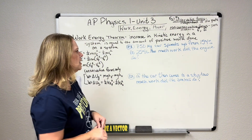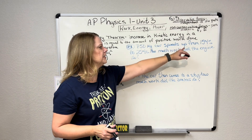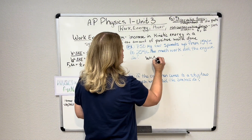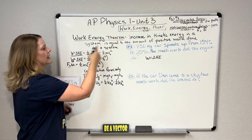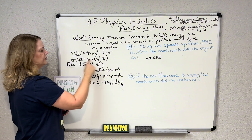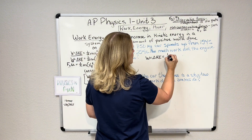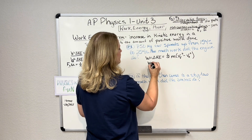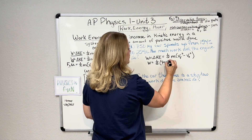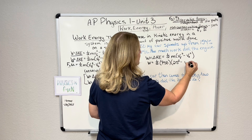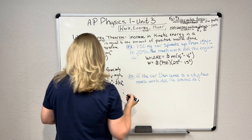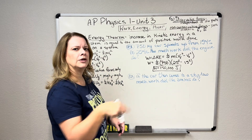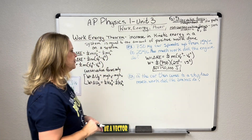Let's do an example. We have a 750 kilogram car speeding up from 15 to 25 meters per second. How much work did the engine do? We know work equals the change in kinetic energy. We have a change in velocity and they want work, so we use: work equals one half times mass times final velocity squared minus initial velocity squared. Plugging in: one half times 750 times (25 squared minus 15 squared). We get 150,000 joules. Work and kinetic energy share the same unit — the joule — so that checks out.